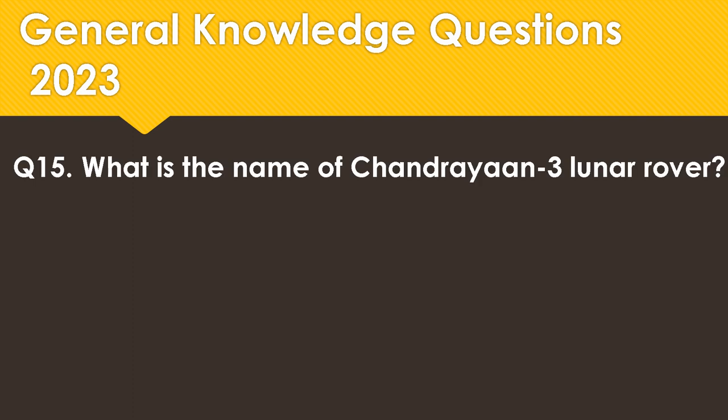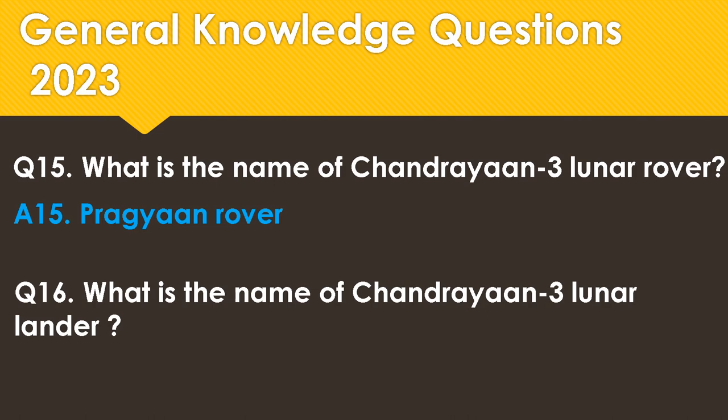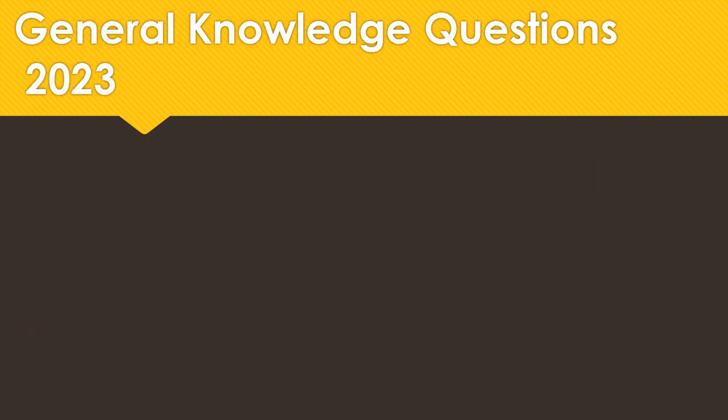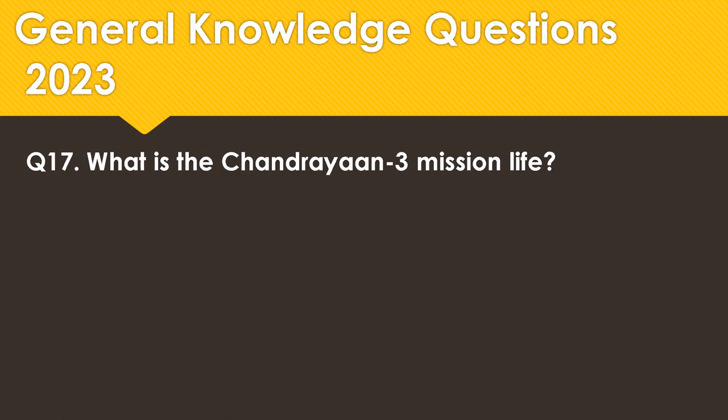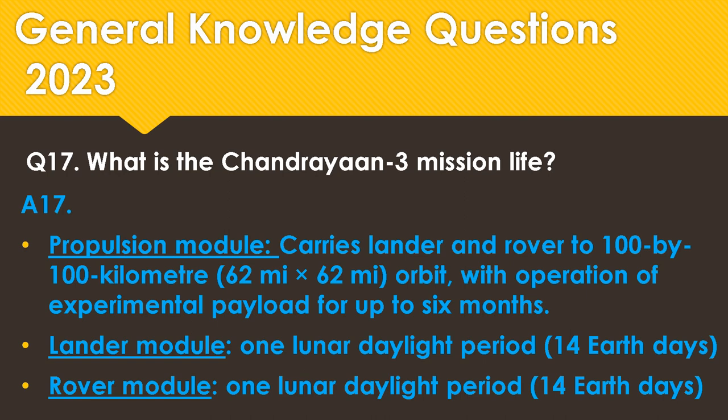What is the name of the Chandrayaan 3 lunar rover? It's Pragyan Rover. What is the name of the Chandrayaan 3 lunar lander? It's Vikram Lander. What is the Chandrayaan 3 mission life? The Propulsion Module carries the lander and rover to a 100 km x 100 km orbit with operation of experimental payload for up to six months. The Lander Module's life is one lunar daylight period, that is 14 Earth days, and the Rover Module's life is also one lunar daylight period, that is 14 Earth days.